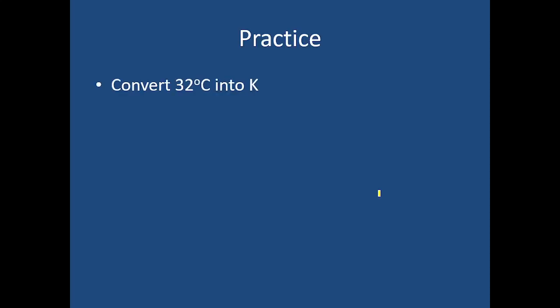If you want to convert 32 degrees Celsius into Kelvin, the formula is to add 273. So 32 plus 273 gives us 305 Kelvin. Therefore, 32 degrees Celsius equals 305 Kelvin.